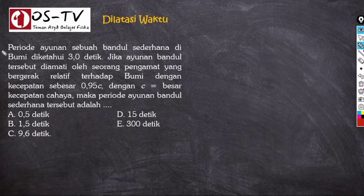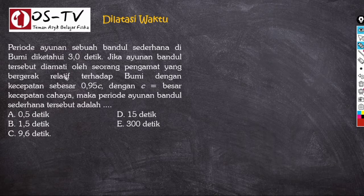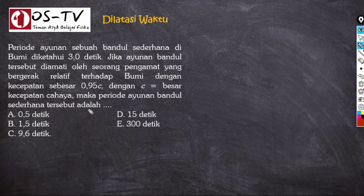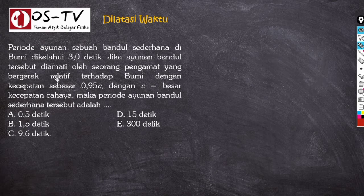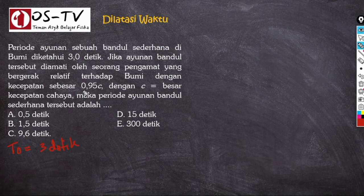Di sini disebutkan bahwa periode ayunan sebuah bandul sederhana di bumi diketahui 3 detik. Jika ayunan bandul tersebut diamati oleh seorang pengamat yang bergerak relatif terhadap bumi dengan kecepatan sebesar 0,95C, di mana C adalah besar kecepatan cahaya, maka periode ayunan bandul tersebut adalah berapa? Kita identifikasi: T₀ = 3 detik adalah periode bandul di bumi.